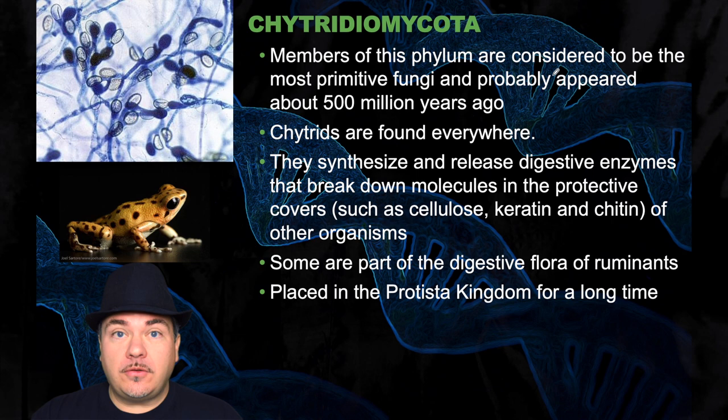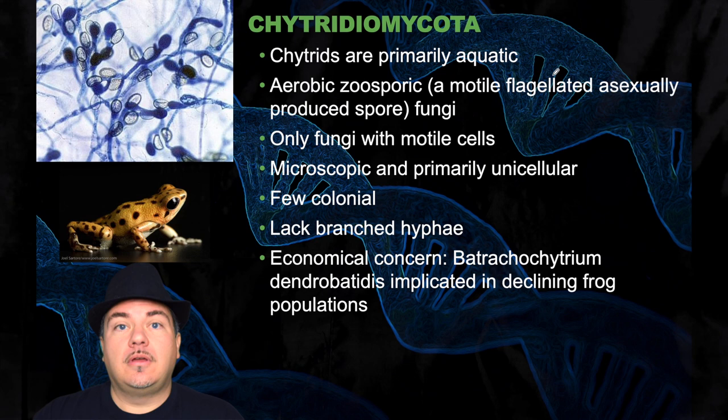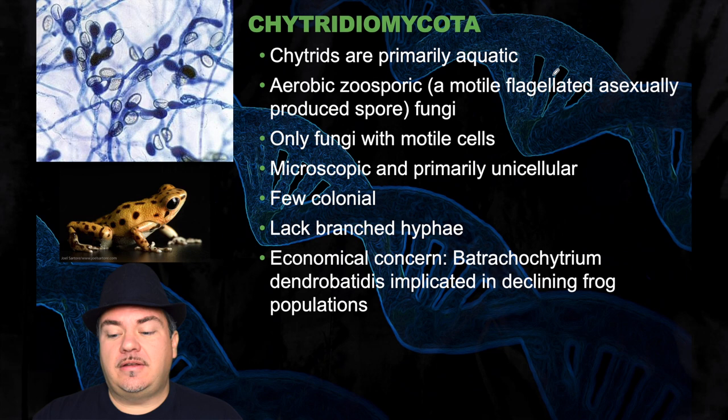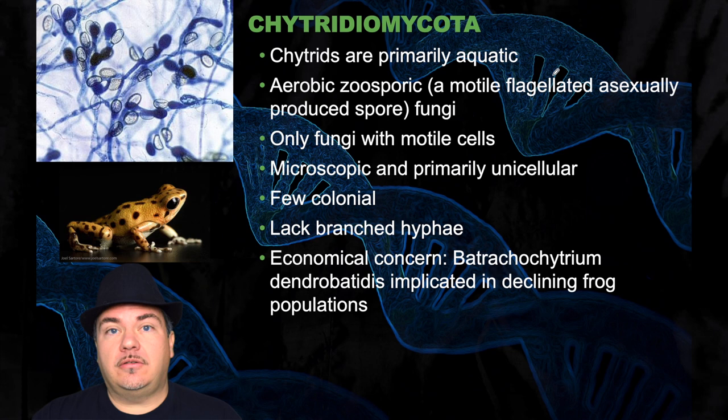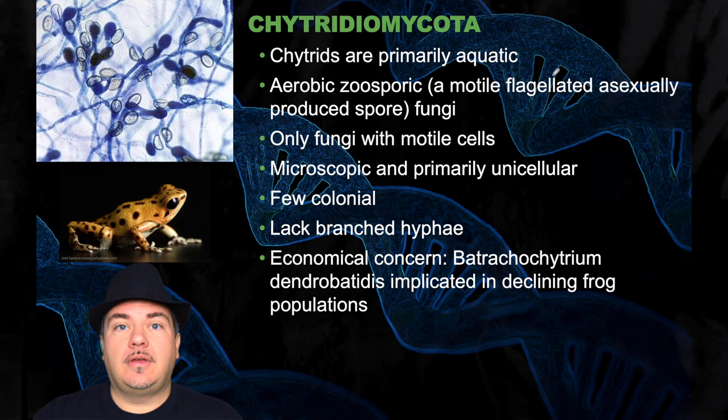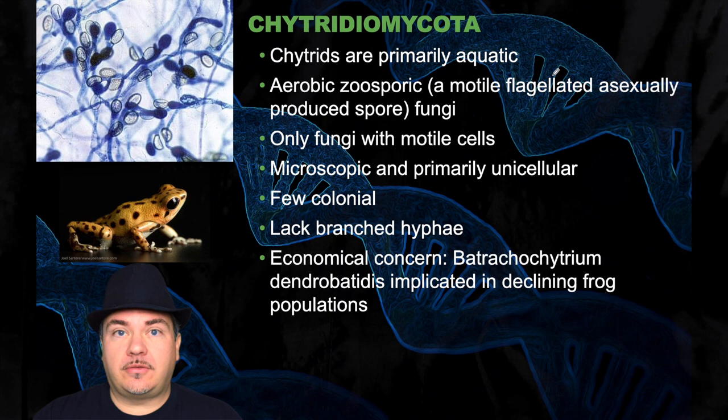They're primarily aquatic and aerobic, and zoosporic, which means they have a motile, flagellated, asexually produced spore. They're the only fungi with motile cells. They're microscopic and primarily unicellular — so one individual is only one cell big — but a few of them can form colonies. They lack the branching hyphae that you characteristically think of when you think of fungi. One of these species of fungi is implicated in the declining frog populations we're seeing in our ecosystems.